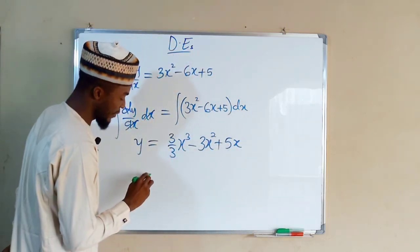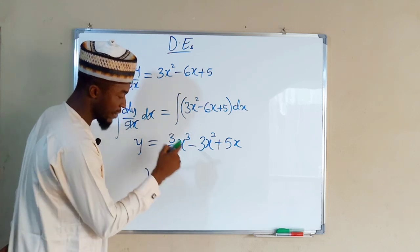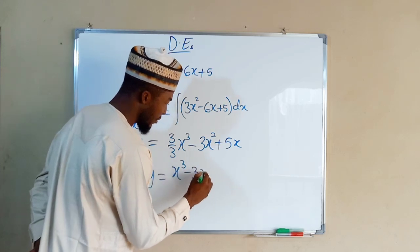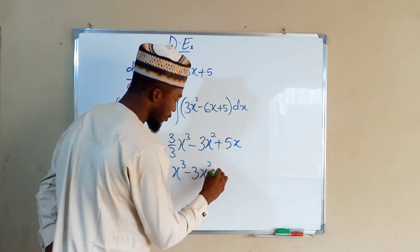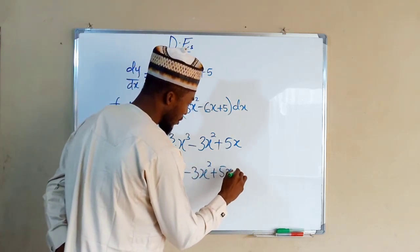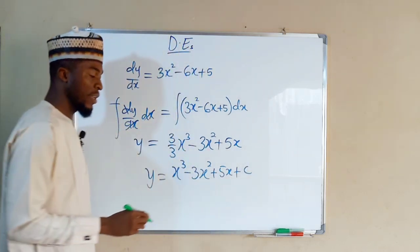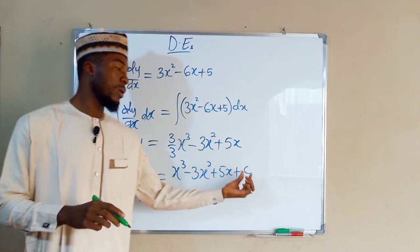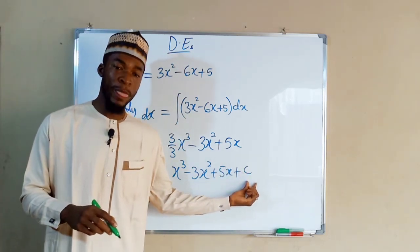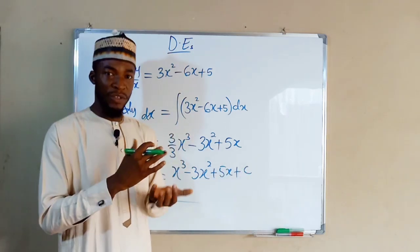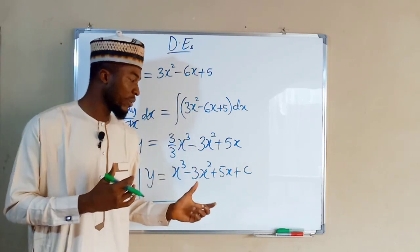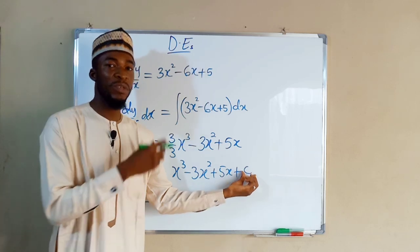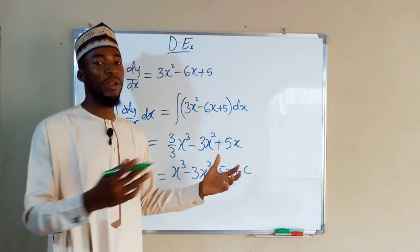Let us further simplify. Three divided by three is one, so we have y equals x to the power of three minus three x to the power of two plus five x, plus our constant of integration c. We call this the general solution because the value of c is unknown. If additional information about the differential equation is given, we can use it to find the value of c, then substitute it back to obtain a particular solution.